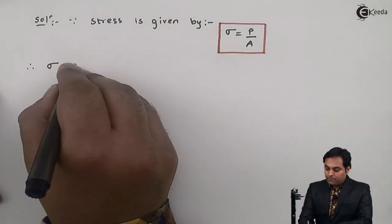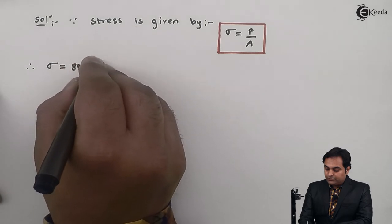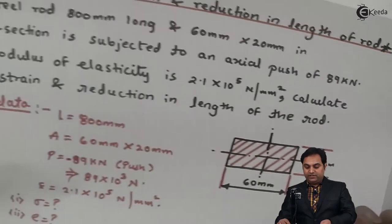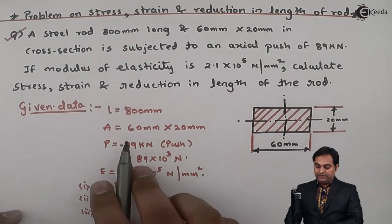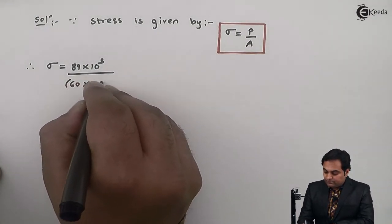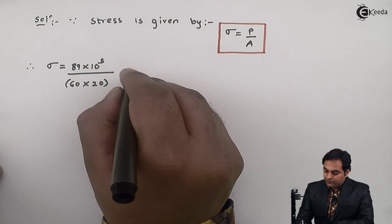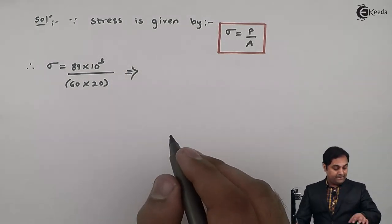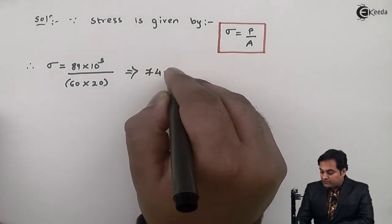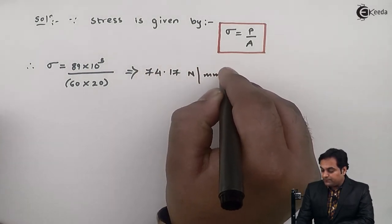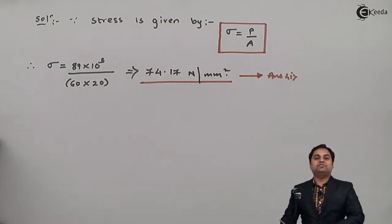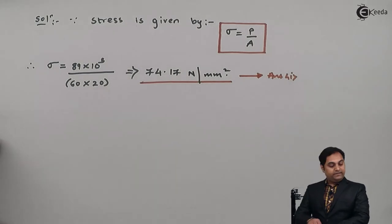Stress Sigma = P / A. Therefore Sigma = 89 × 10³ divided by area. Since we have a rectangular cross-section, area is 60 × 20. Therefore stress comes out to be 74.17 Newton per mm square. This is the first answer.